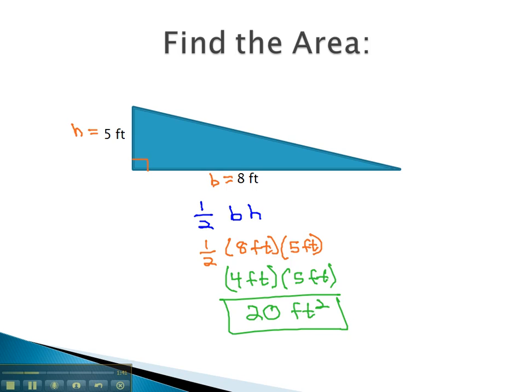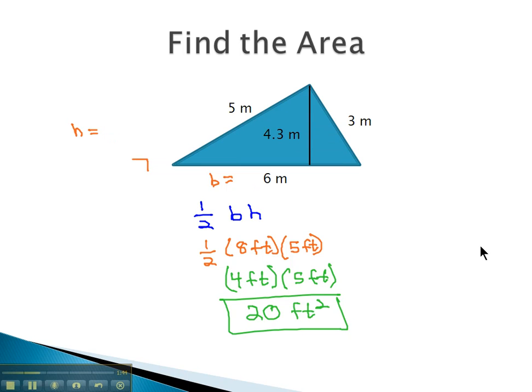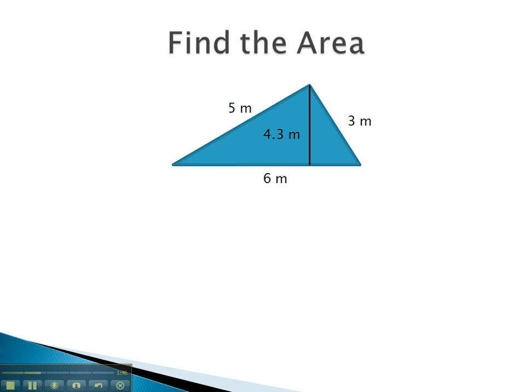Let's take a look at another example. Again, we have a triangle, and so we'll use the formula for area of 1 half times the base times the height. We have a lot of numbers here, so we need to decide what's the base and what's the height. The base and height meet at a perfect 90 degree angle, so we'll call the base 6 and the height 4.3.